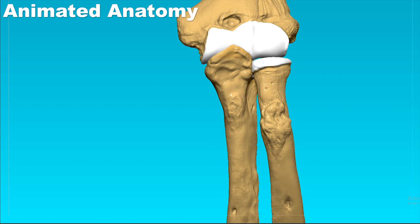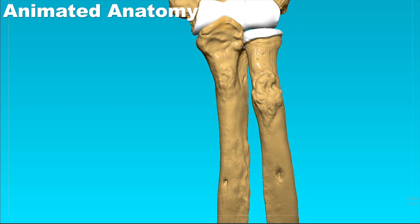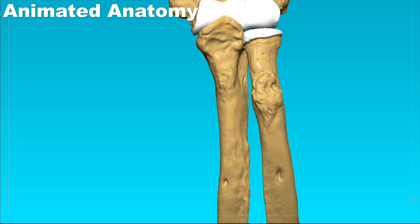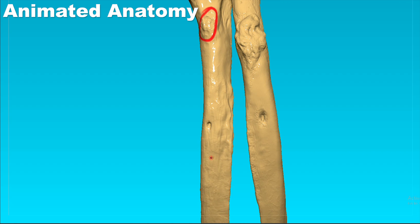Now let's explain some other properties of the ulna. This here is the ulnar tuberosity. We can also see here the nutrient foramen of the ulna, and the nutrient foramen is on the anterior surface.